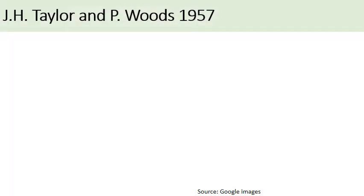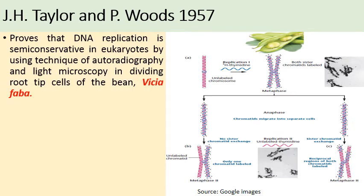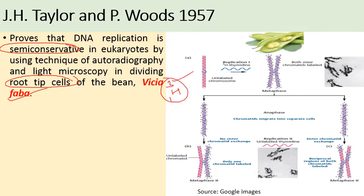Similar results were observed by J.H. Taylor and P. Woods in 1957 in the root tip of Vicia faba (broad bean) using radioactive tritium-labeled thymidine. This experiment also proved that DNA replication is semi-conservative in eukaryotes, using the technique of autoradiography and light microscopy in dividing cells of the root tip of Vicia faba. Normal thymidine was replaced with the radio-labeled isotope of hydrogen, tritium, confirming semi-conservative replication.